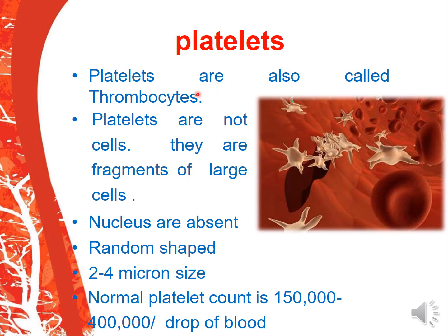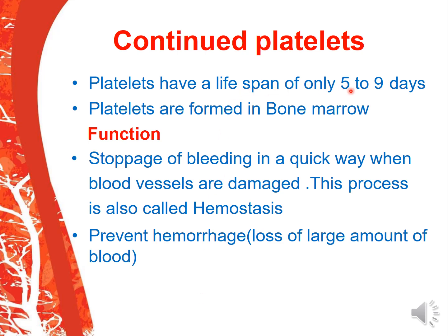Coming to platelets — they are also called thrombocytes. They are not cells but fragments of large cells. The nucleus is absent. They are random-shaped or shapeless. Each has a different shape; their size is 2 to 4 microns. Normal platelet count is 1.5 to 4 lakhs in a drop of blood. They have a lifespan of 5 to 9 days and are formed in bone marrow. Their function is to help in stoppage of bleeding when blood vessels are damaged — this process is called hemostasis. They also prevent hemorrhage, which is the loss of a large amount of blood.